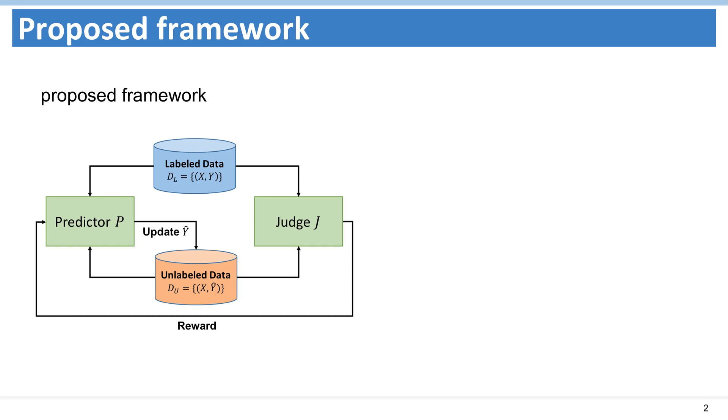The judge network takes sentence-label pairs as input and determines whether a given input pair has a predicted label or a true label. The judge network is trained using real sentence-label pairs as positive examples and predicted sentence-label pairs as negative examples.